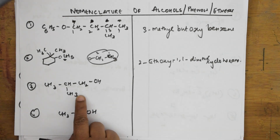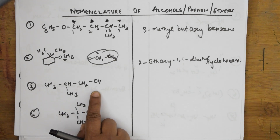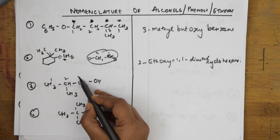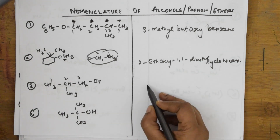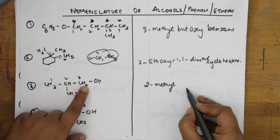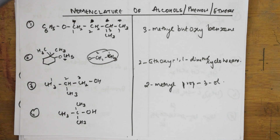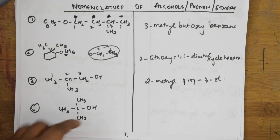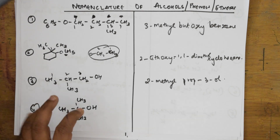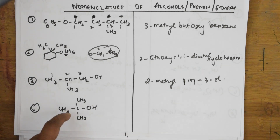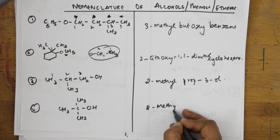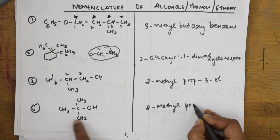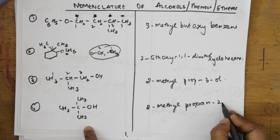Now for an alcohol example: with a function group present, number one, two, three — this gives a three-carbon chain, which is propane. The hydroxyl group is at the first position. Here we have a tertiary carbon with four groups, but the longest chain is one, two, three — propane — with a methyl substituent at position two: 2-methylpropan-1-ol.